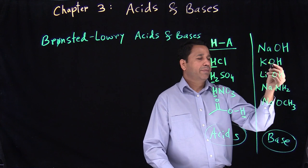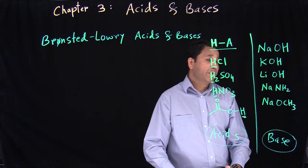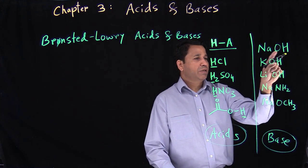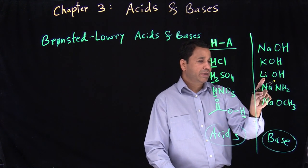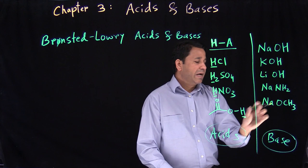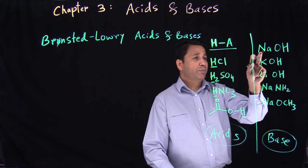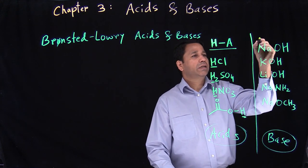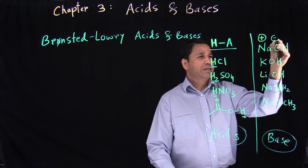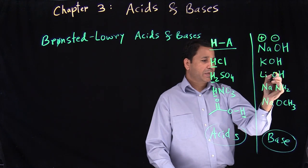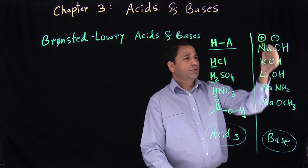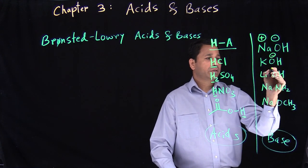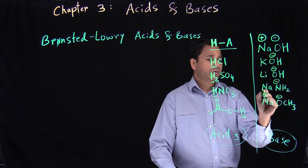So if I have to call something a base, what is the common thing here? You have oxygen bonded to sodium, oxygen bonded to potassium, oxygen bonded to lithium — these are all metals on the left-hand side of the periodic table forming a bond with the right-hand side. When left and right form a bond, that bond is ionic. So you have a plus and minus: potassium plus, O minus, lithium plus, O minus, sodium plus, NH2 minus. So you have all these negative charges on the oxygen or nitrogen.